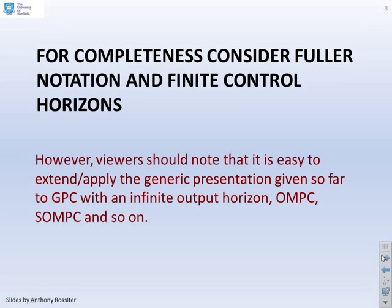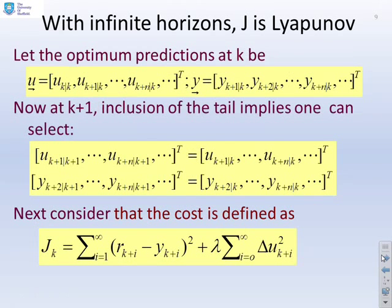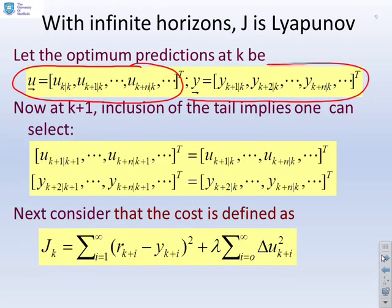Now, for completeness, what I'm going to do is just add some slightly fuller notation to show that this proof can also be applied with slightly different performance indices. So let's assume that we had input predictions a bit like this, u future, and output predictions a bit like this, so that's the standard notation.